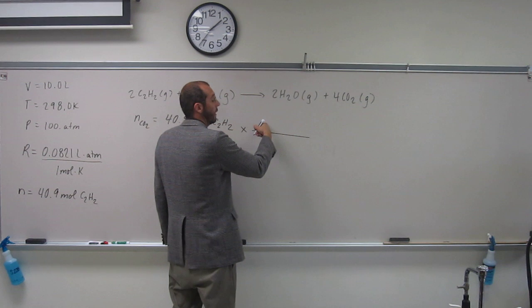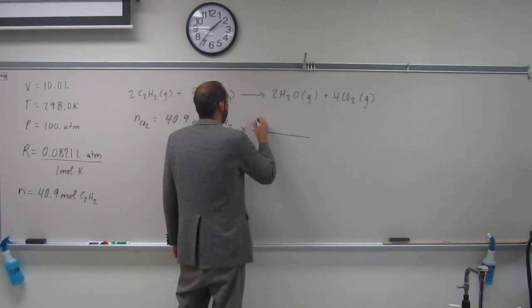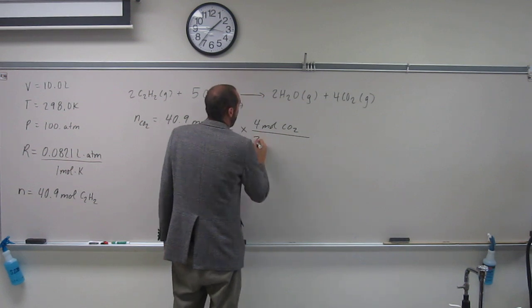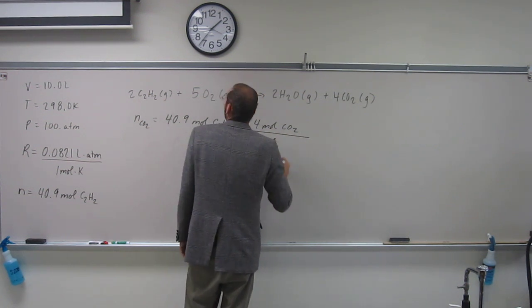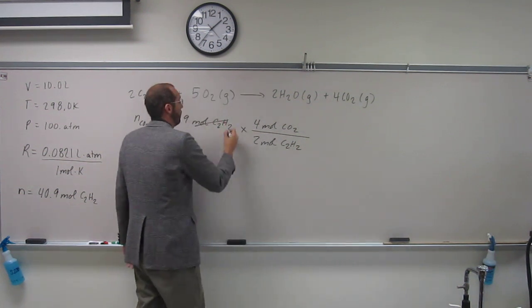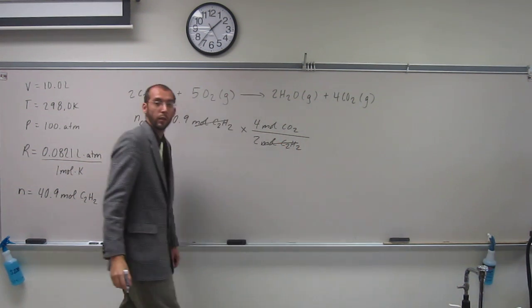Carbon dioxide is what we want, so we're going to put that up here. Four moles of CO2 will be formed for every two moles of C2H2 we use. So moles C2H2 cancel out.